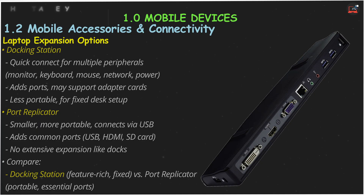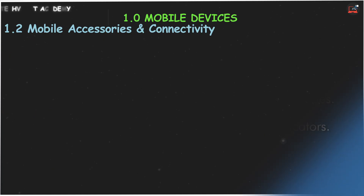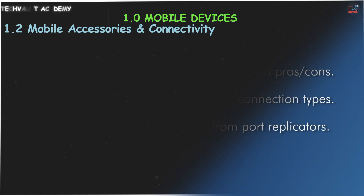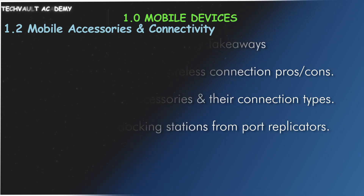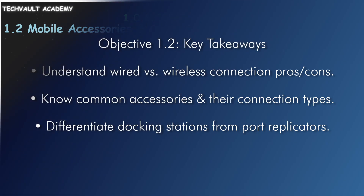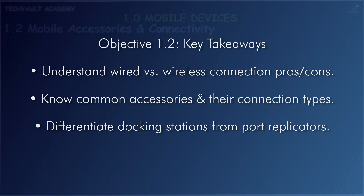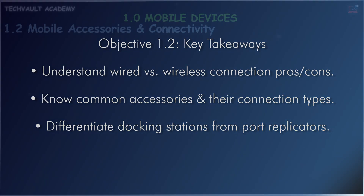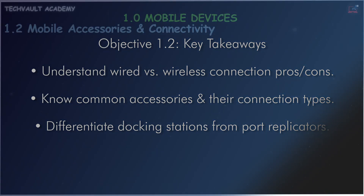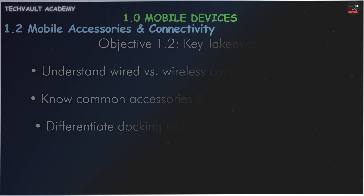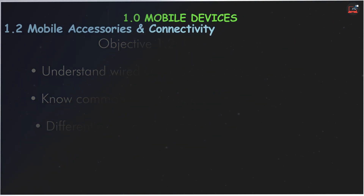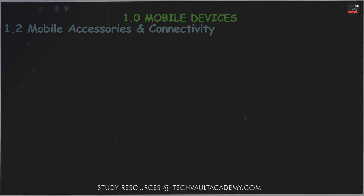And that's a whirlwind tour of mobile device accessories and connectivity for Objective 1.2. The key is understanding what each does, how it connects, and its main advantages or differences compared to similar options. Join us for the next A+ Core 1 objective. Thanks for watching TechVault Academy.